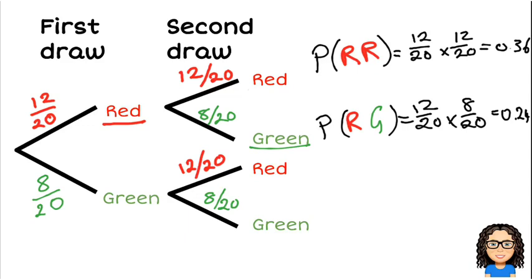So then we look at our third combination. So in this combination I could get a green counter first and then a red counter. So I could get a green, then a red. Then the chance of that, the chance of a green first is 8 out of 20. The chance of a red second is 12 out of 20. I'm going along the branches and that will give me a probability of 0.24.